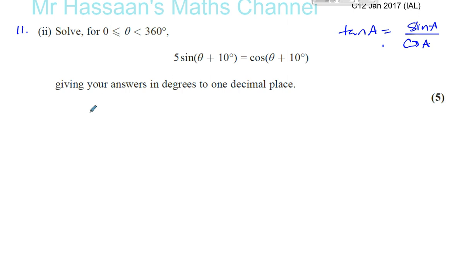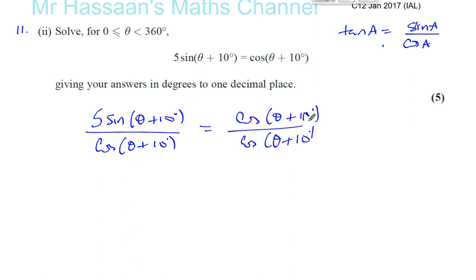Let's divide everything by cosine theta plus 10. So you have 5 times sine of the angle theta plus 10 divided by cosine theta plus 10 is equal to cosine of theta plus 10 divided by itself, cosine of theta plus 10. It's supposed to be a bracket.